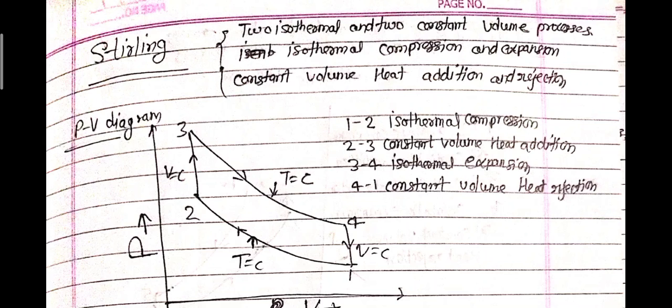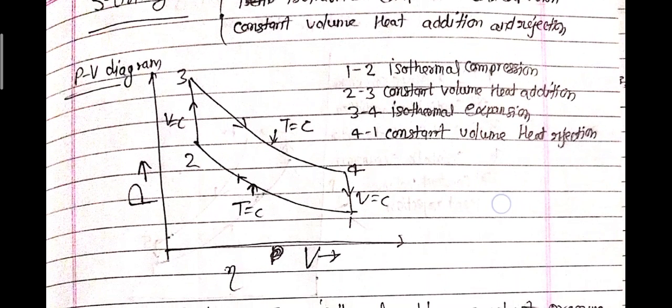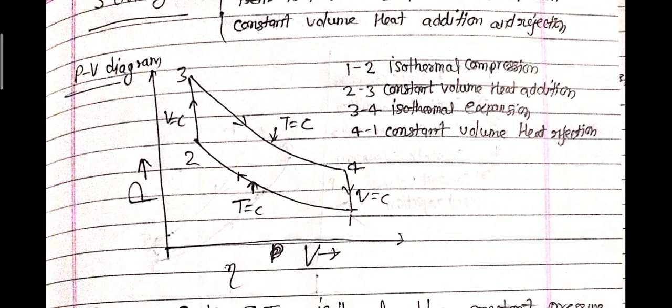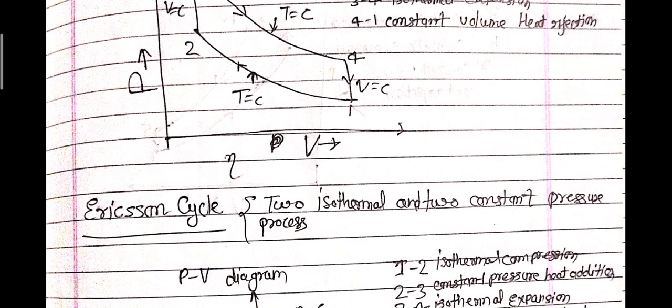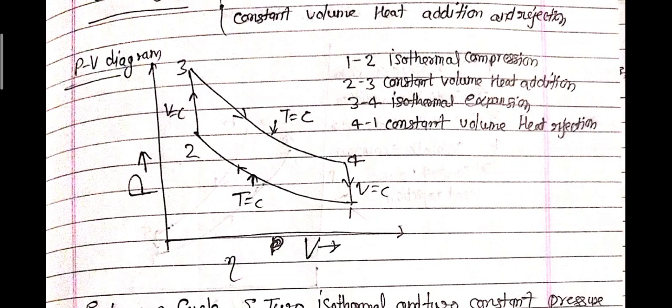The Stirling cycle has two isothermal and two constant volume processes — isothermal compression and expansion, with constant volume heat addition and rejection. As shown in the PV diagram: process 1 to 2 is isothermal compression, process 2 to 3 is constant volume heat addition, process 3 to 4 is isothermal expansion, and process 4 to 1 is constant volume heat rejection.